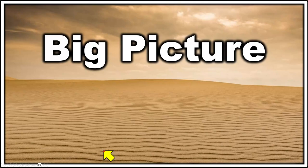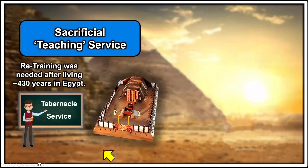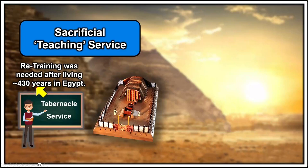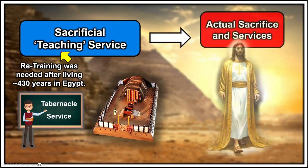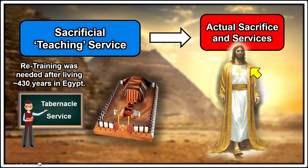We're going to take a look at the big picture first. This is the sacrifice in the desert — a teaching service. The Israelites were held captive for over 430 years in Egypt and had forgotten most of what God had taught them about the sacrificial services. So this tabernacle service is really a teaching aid that God put in place for the Israelites and later for us, so we can learn what God's salvation plan is all about. The actual plan is being executed by God the Father, Jesus, and the Holy Spirit.